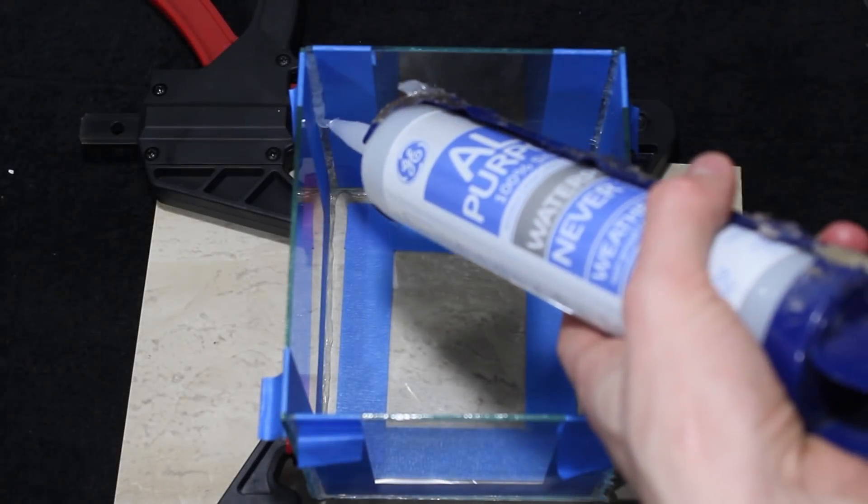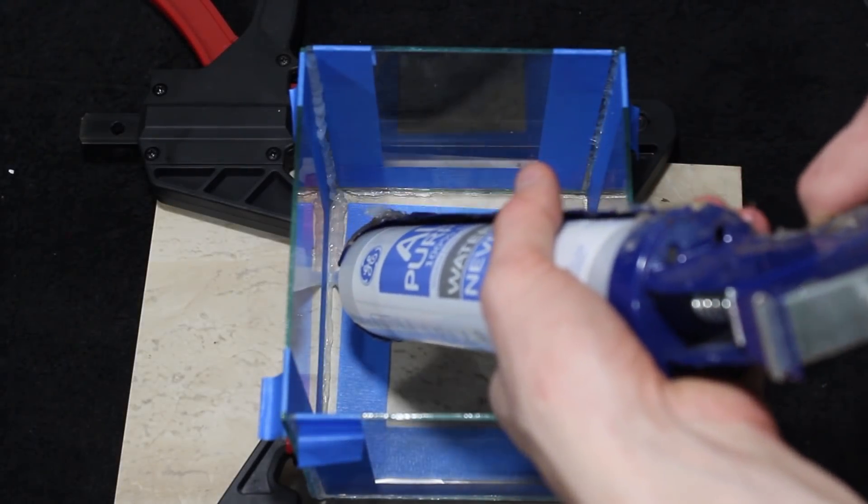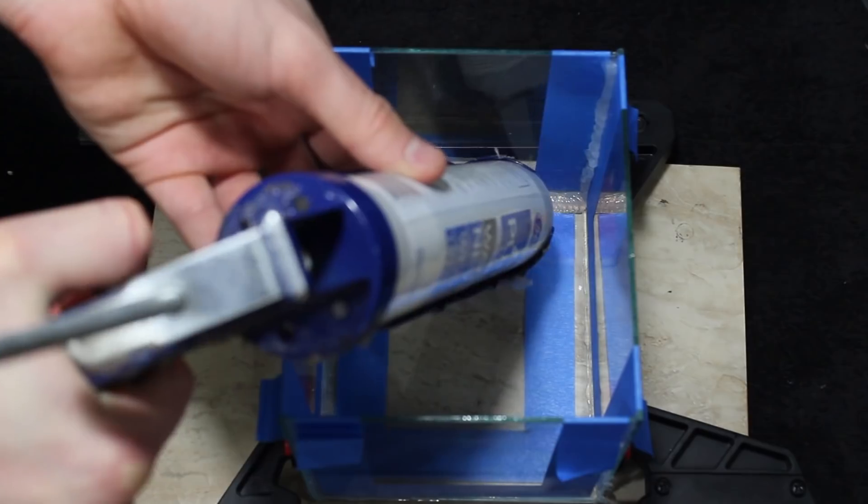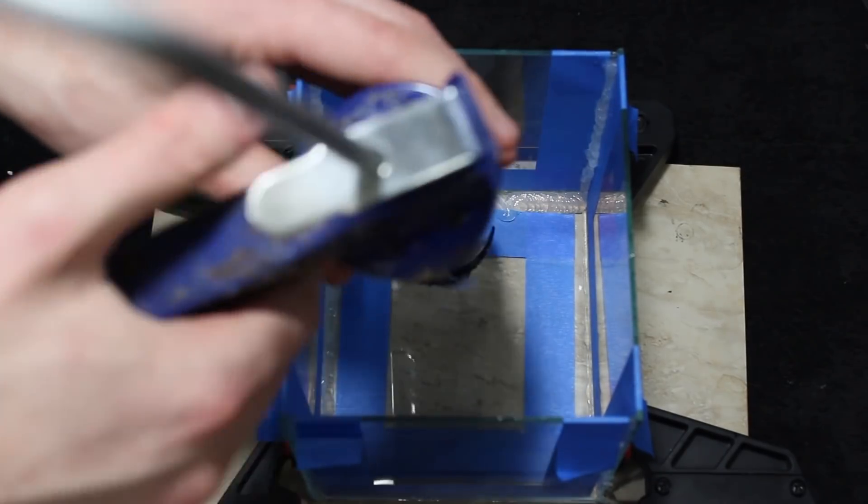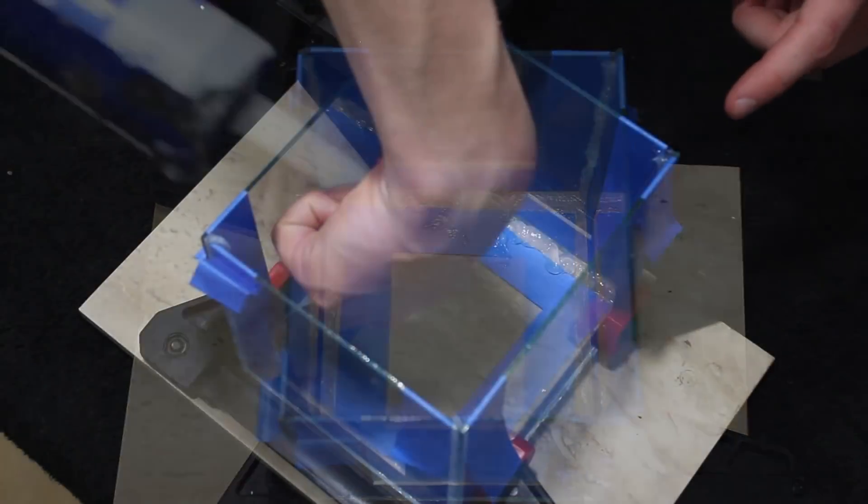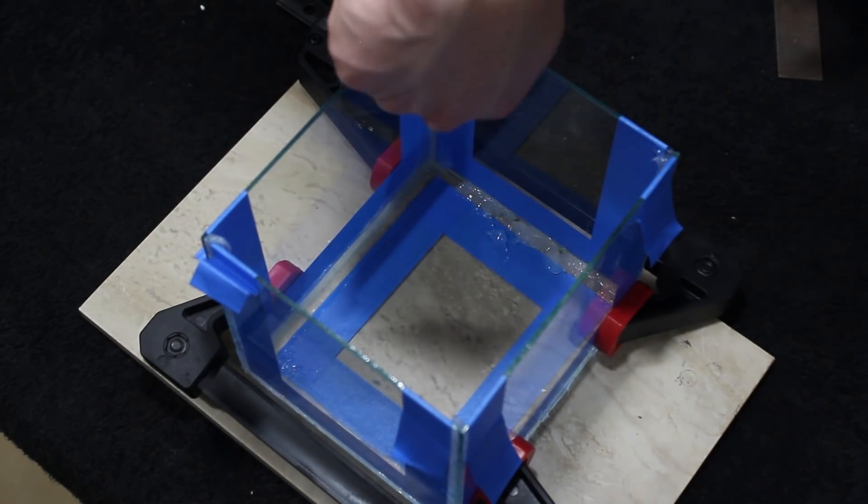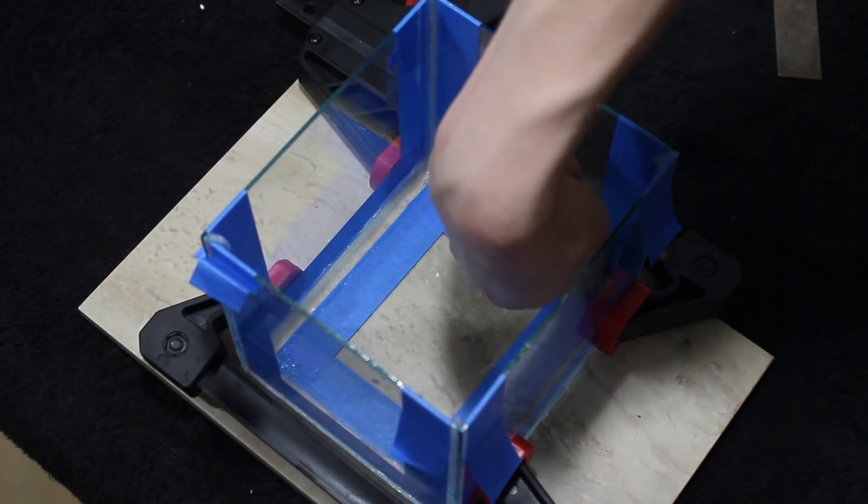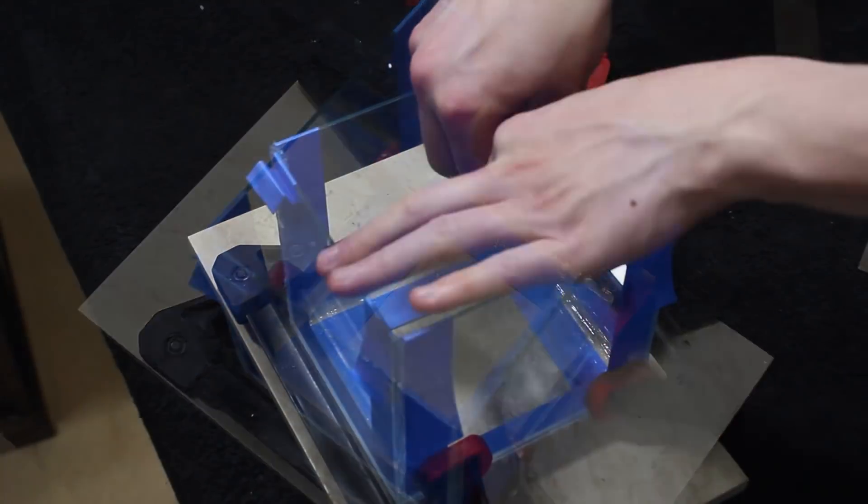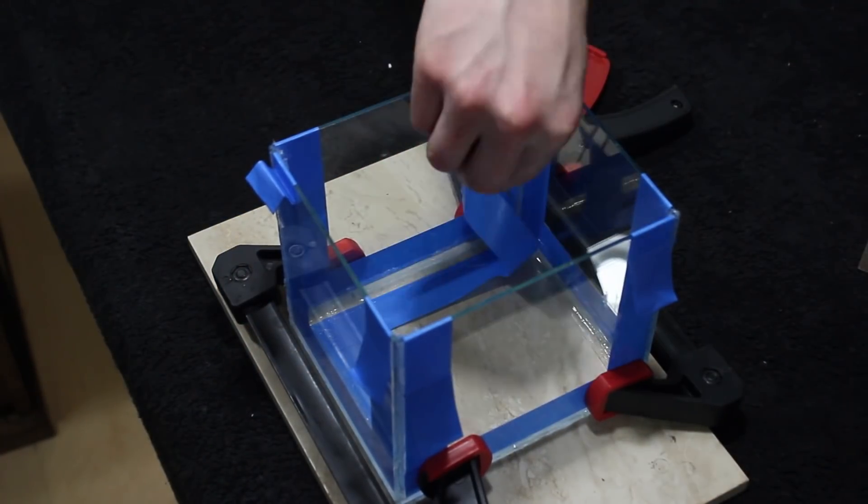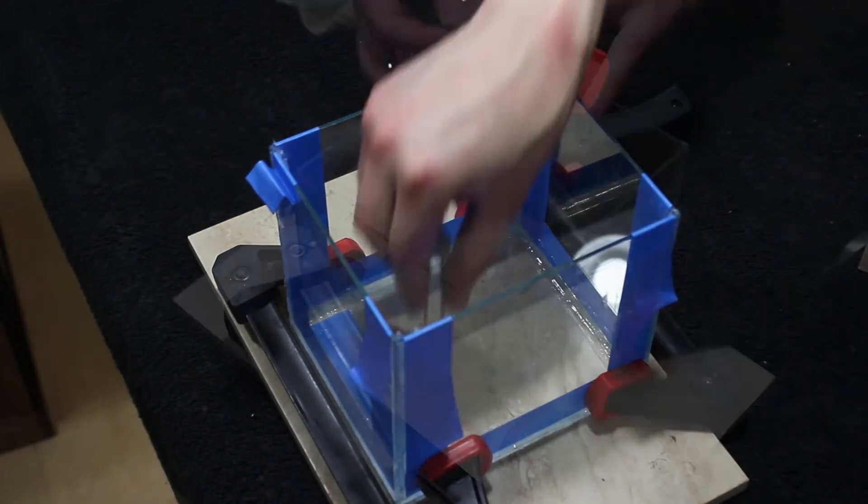Now that we got the aquarium all squared up, a bead of silicone was applied to the interior seams of the aquarium. With an appropriate bead of silicone in place, I smoothed it out with my finger. Lastly I removed all of the masking tape and allowed the silicone to cure for a solid 24 hours.